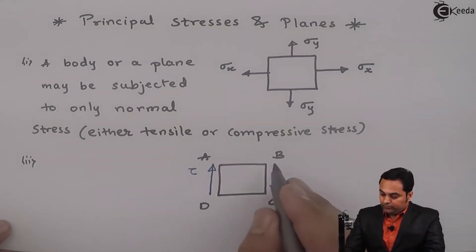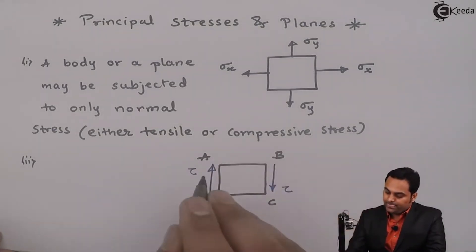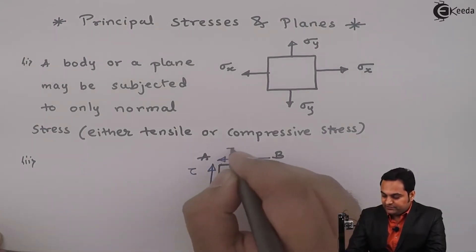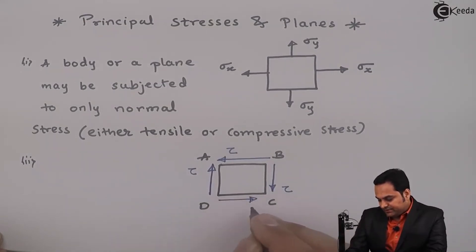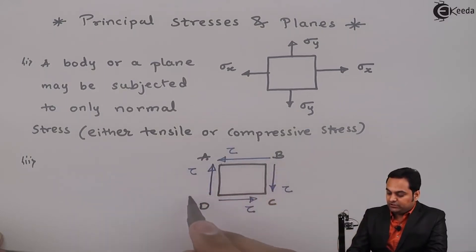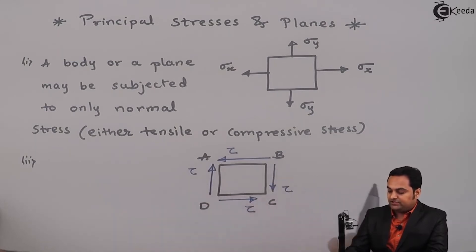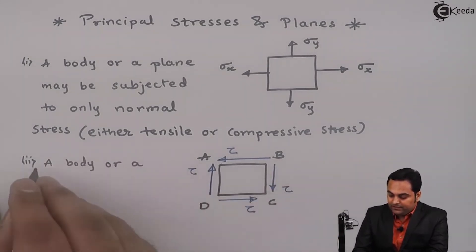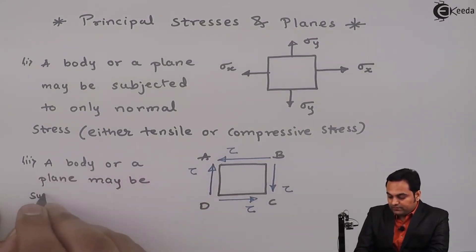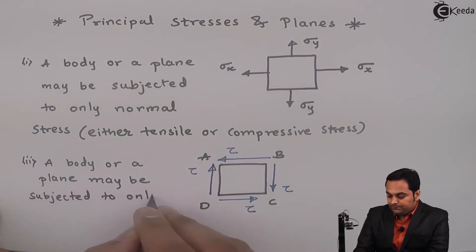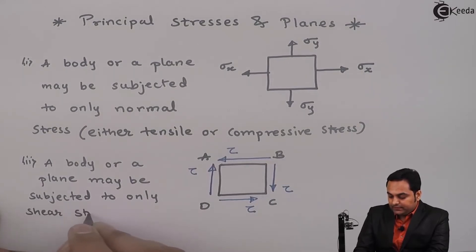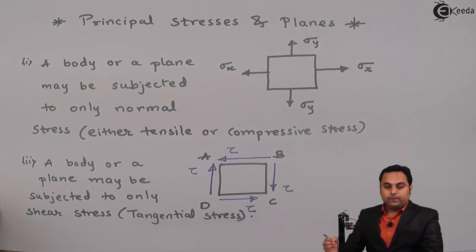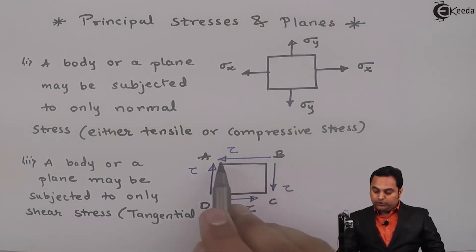On face AD the shear force is acting upward, on BC it is acting downward — because of that there is shearing or sliding of this plane. This is clockwise shear. Similarly, on face AB there can be shear stress acting towards left (Tau), and on face DC there can be shear stress acting towards right — this is called anti-clockwise shear. So a body or a plane may be subjected to only shear stress, also called tangential stress.